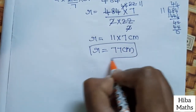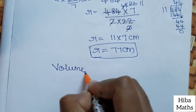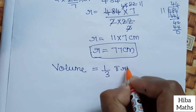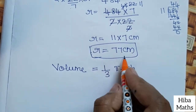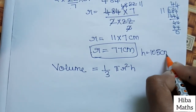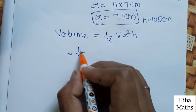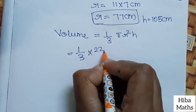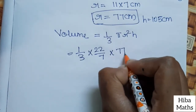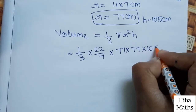Now we apply the volume formula for a cone: V = (1/3)πr²h. Here r = 77 cm and h = 105 cm. We substitute these values into the formula.